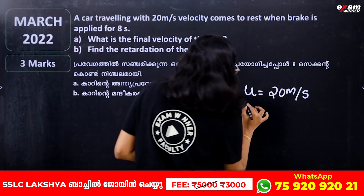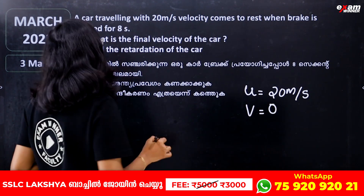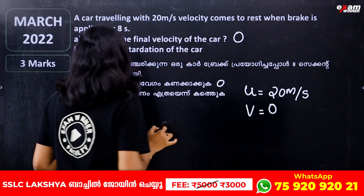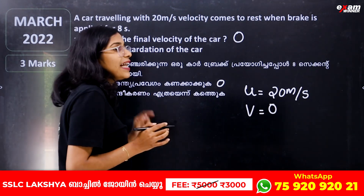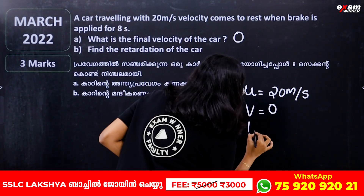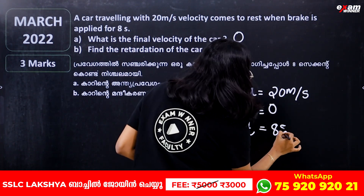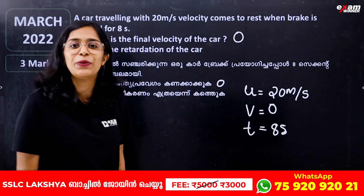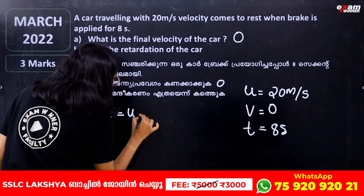The final velocity is 0 because the car is stopped. Time is equal to 8 seconds. We use the equation V equals U plus AT to find retardation.